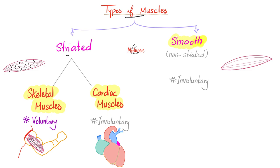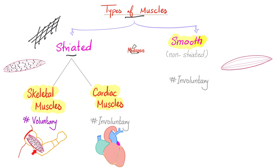We can divide your muscles into striated — they do have striations — and non-striated or smooth. The striated are subdivided into skeletal muscles, such as your biceps, triceps, quadriceps, etc., or cardiac muscle, that's your heart. Examples of smooth muscles are your stomach, your small intestine, your vessels.